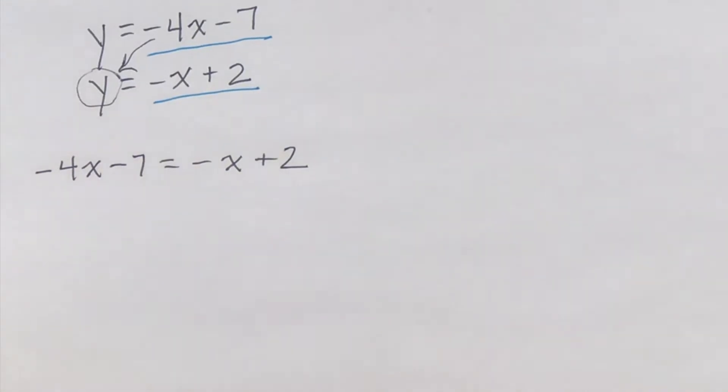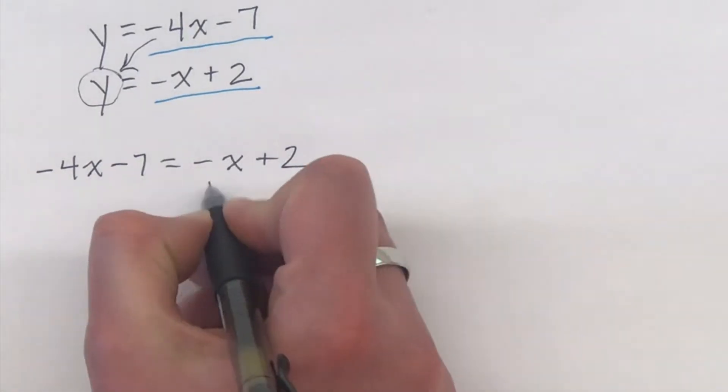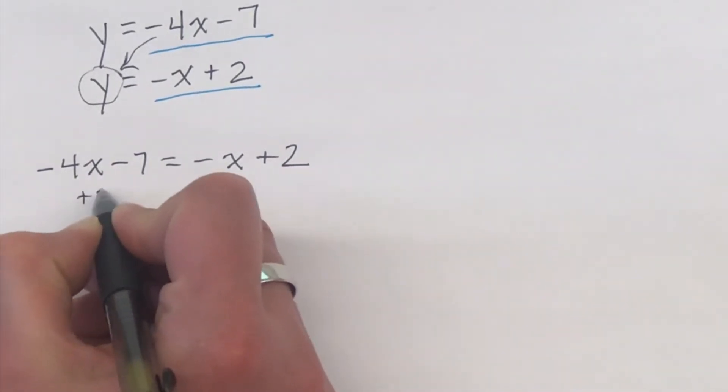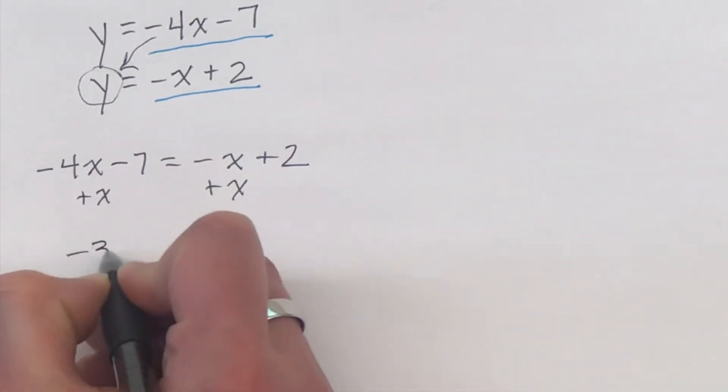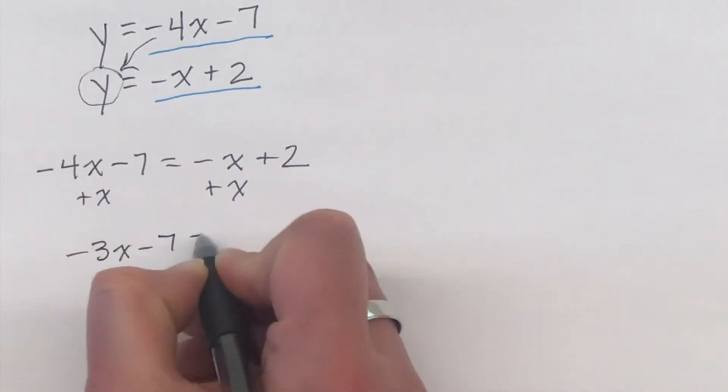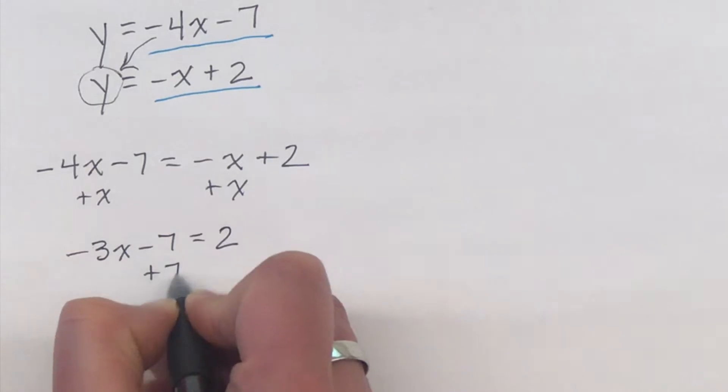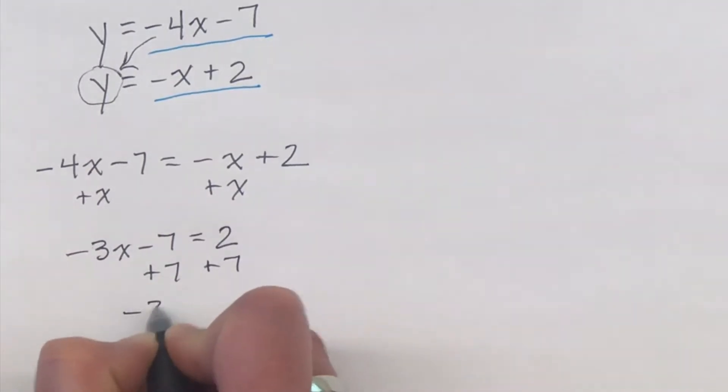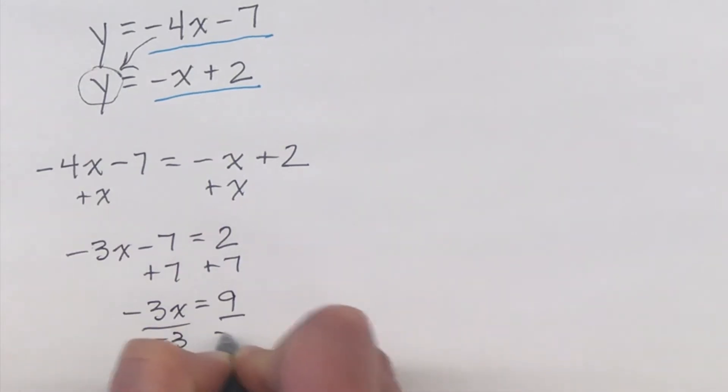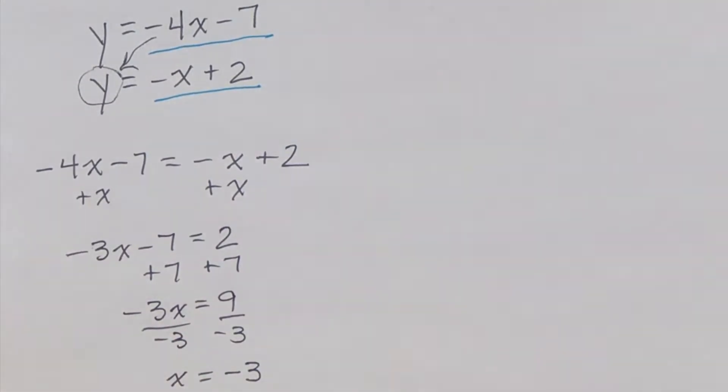Now we just need to solve this equation for x. So we're going to add x to both sides of the equation, and we're left with negative 3x minus 7 is equal to 2. Then we add 7 to both sides, and we get negative 3x is equal to 9. Divide both sides by negative 3, and you know that x is equal to negative 3.